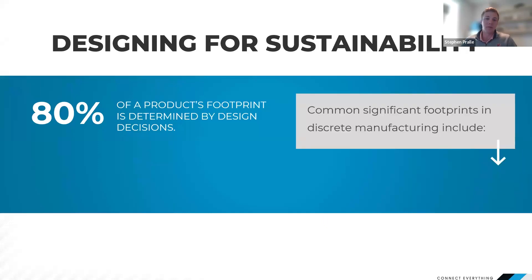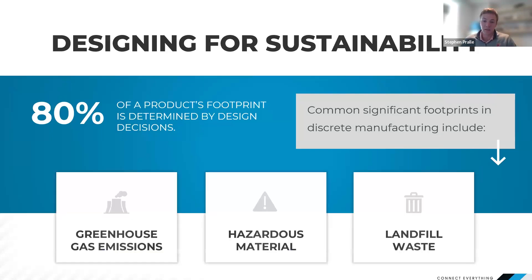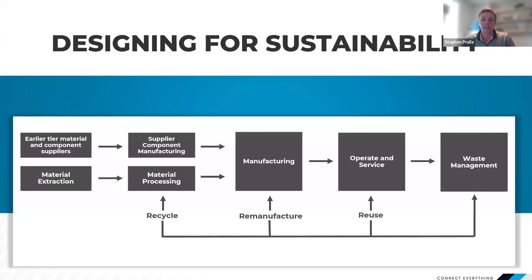What most companies and employees don't actually understand is that 80% of a product's environmental footprint is determined by design decisions. These footprints are contained in greenhouse gas emissions, hazardous materials, and landfill waste — and can all be addressed earlier on in the product development process. Throughout the lifecycle of our products, from materials to manufacturing to waste management, we have an opportunity to optimize our design to be more sustainable and win more business.